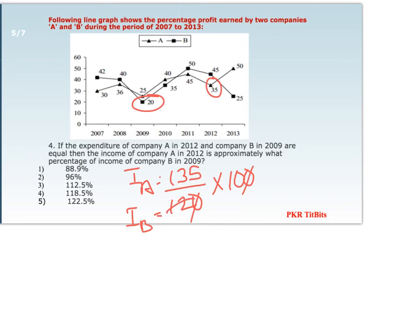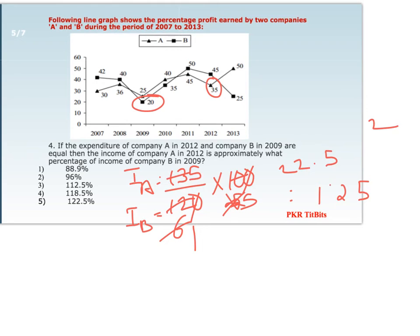Calculating 135 ÷ 120 × 100: this comes out to be 112.5%, which is option 3.